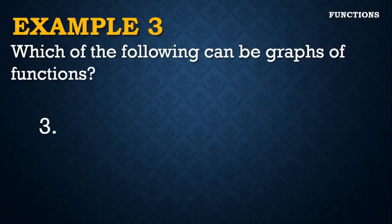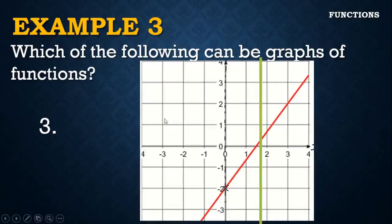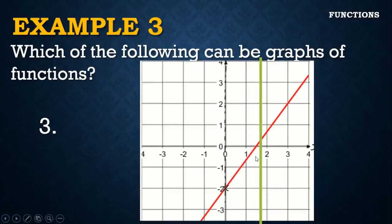Another example: we have a straight line. No matter where you pass the vertical line, it will only intersect one point on the graph of a straight line. Therefore, this graph is a graph of a function — this is called the linear function.